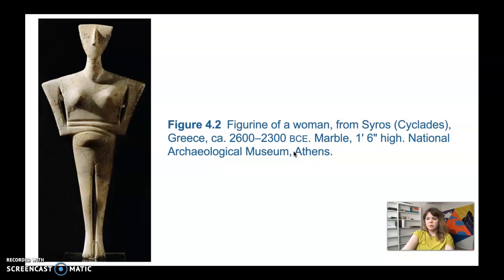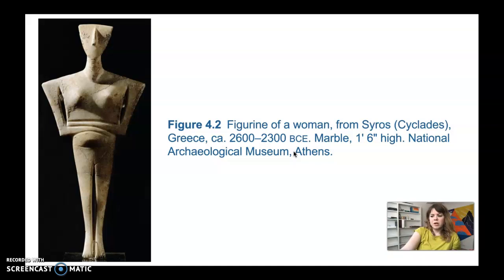This figure of a woman is from Syros, a Cyclades island in Greece, dated 2600–2300 BCE. It's marble, about one foot six inches high, and comes from a grave on the island of Syros. The figurine was carved using probably obsidian tools, and then the surface was polished with a granular rock called emery — the same material used in emery boards for filing nails.